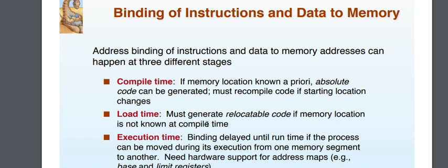For load time binding, the system must generate relocatable code if the memory location is not known at compile time. If you change the address, it will be saved byte by byte — one byte, two bytes, three bytes — converted to the correct address. So, relocatable code must be generated if memory location is not known at compile time.